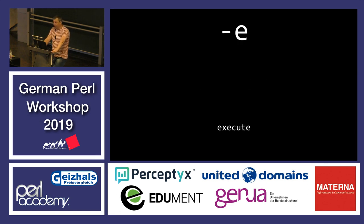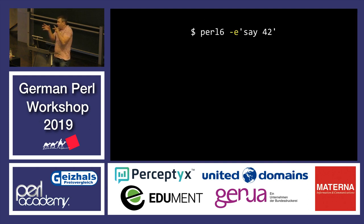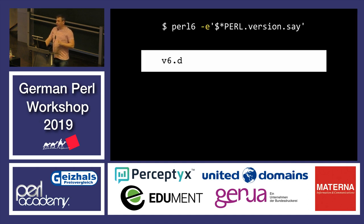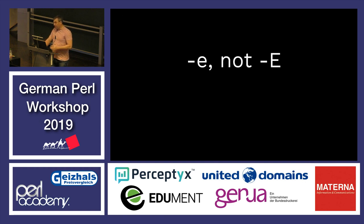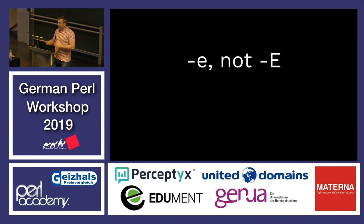The dash-e option just executes what is said on the command line. It's really simple. For example, here I can print the version of Perl. The only thing to remember is that it's lowercase e, not capital E — in Perl 5.10 you can use minus capital E to activate the say function, for example.